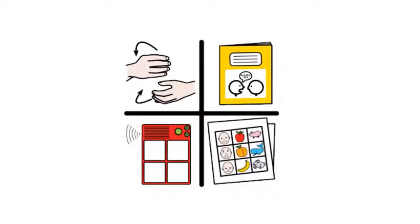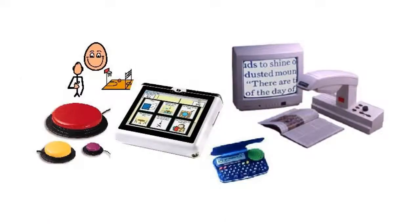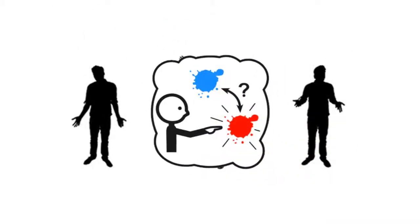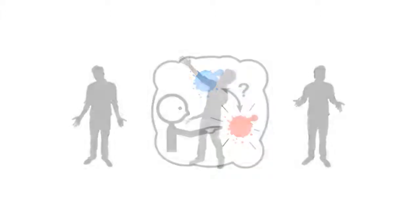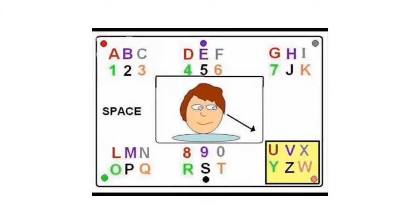AAC can be delivered in a variety of ways, using increasingly complex and modern technology. In low resource settings, we can use no tech communication, which does not require any equipment. This can include body language, gestures, pointing, eye pointing, facial expressions, sounds and signing. But such systems can be limited or open to misinterpretation.